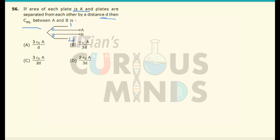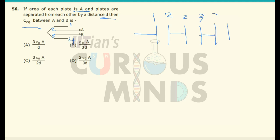Now the 4 plates will form 3 capacitors: the capacitance between plate 1 and 2, the capacitance between plate 2 and 3, and the capacitance between plate 3 and 4. So there are 3 capacitors formed.